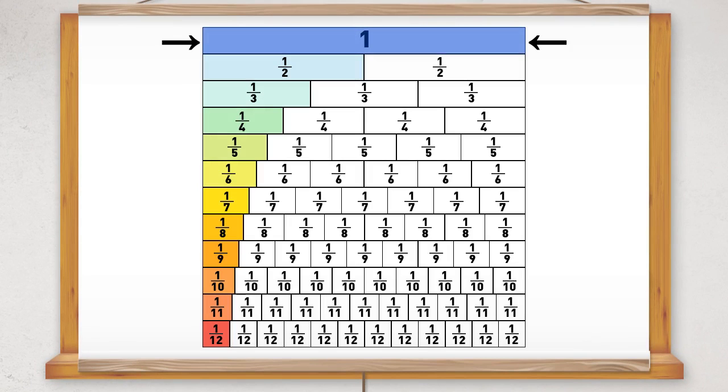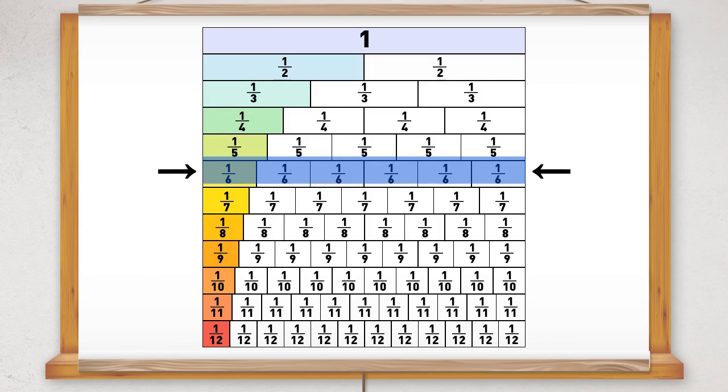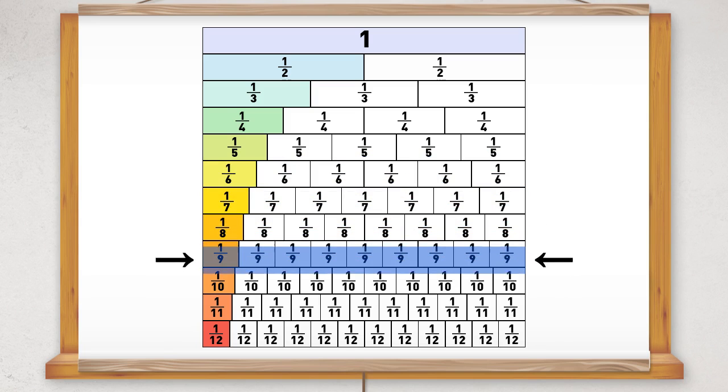This fraction wall shows that a whole one is equal to two halves, which is equal to three-thirds or four-quarters or five-fifths or six-sixths or seven-sevenths or eight-eighths, or nine-ninths or ten-tenths or eleven-elevenths or twelve-twelfths.